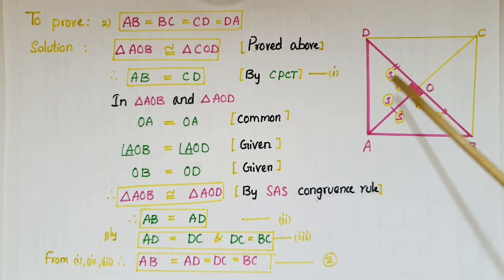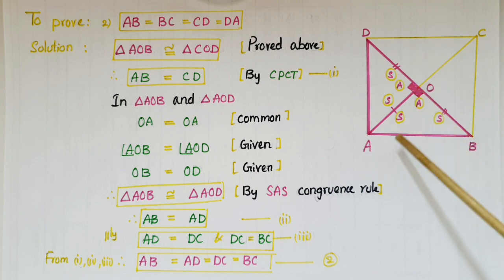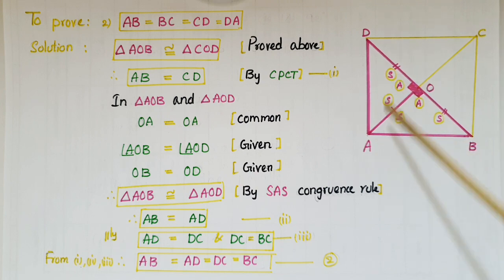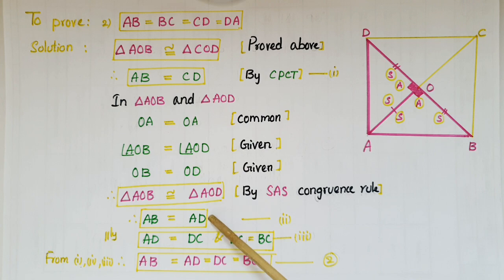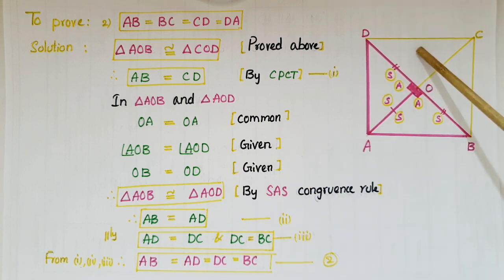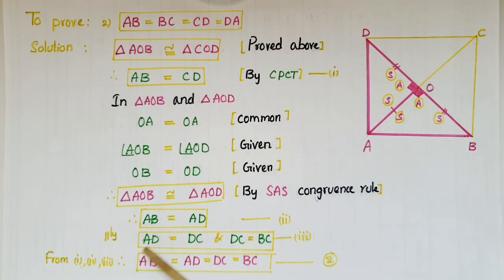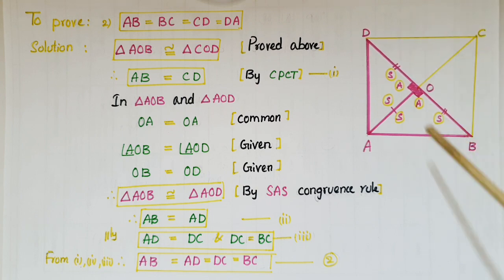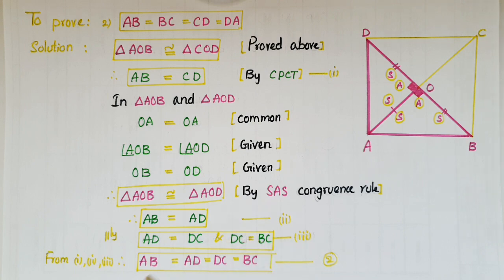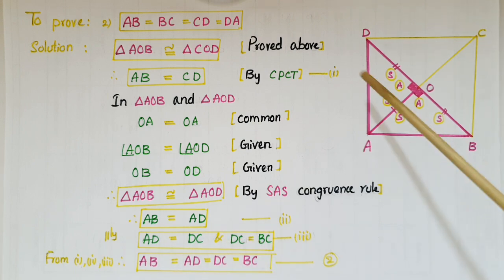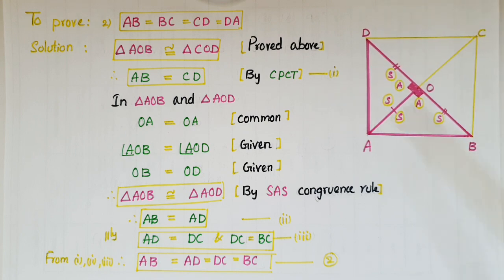Since triangle AOB is congruent to triangle AOD, AB equals AD by CPCT. Similarly, AD equals DC and DC equals BC. Therefore from all three results, AB equals AD equals DC equals BC — all four sides are equal.